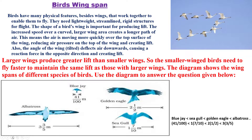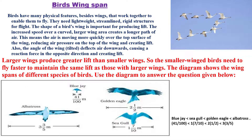This is a very interesting question on the basis of number system. Larger wings produce greater lift than smaller wings — a very simple concept. Birds with smaller wings need to fly faster to maintain the same lift as those with larger wings. The diagram shows the wingspan of different species of birds. Use the diagram to answer the questions given below.